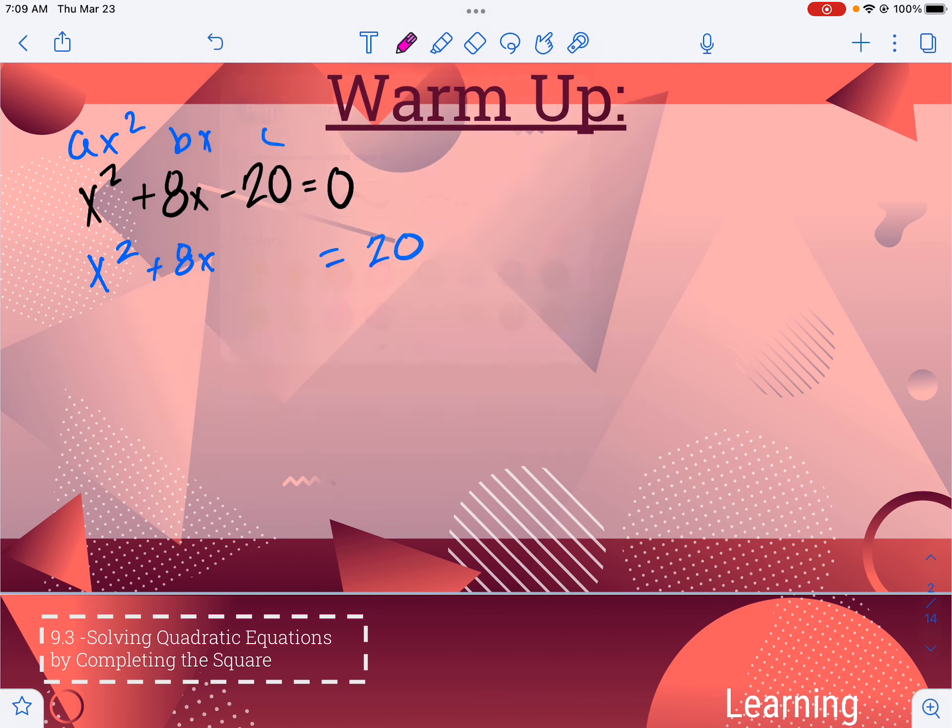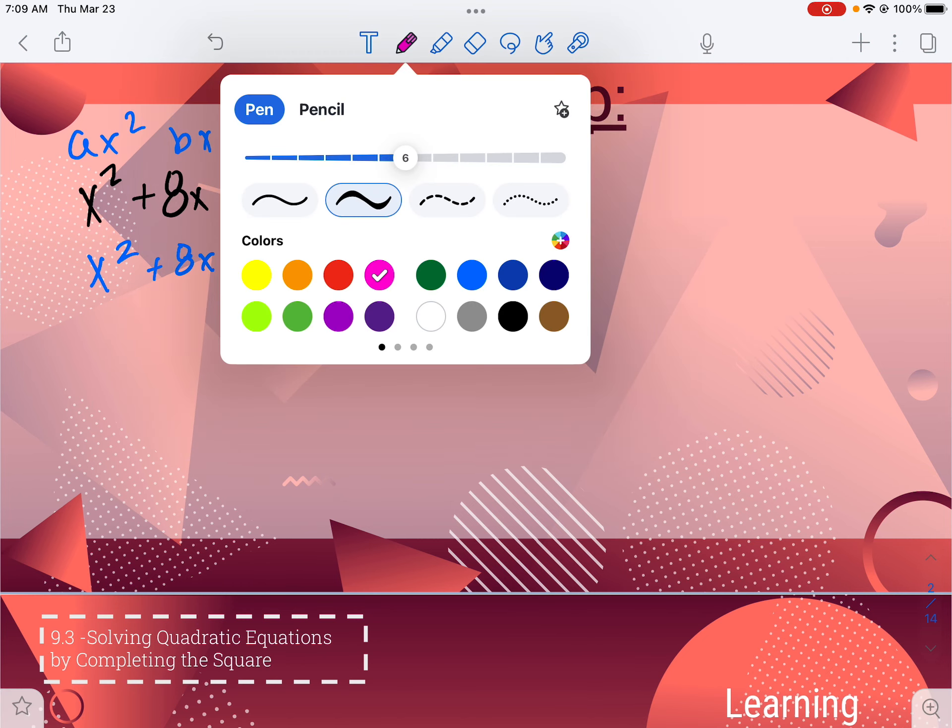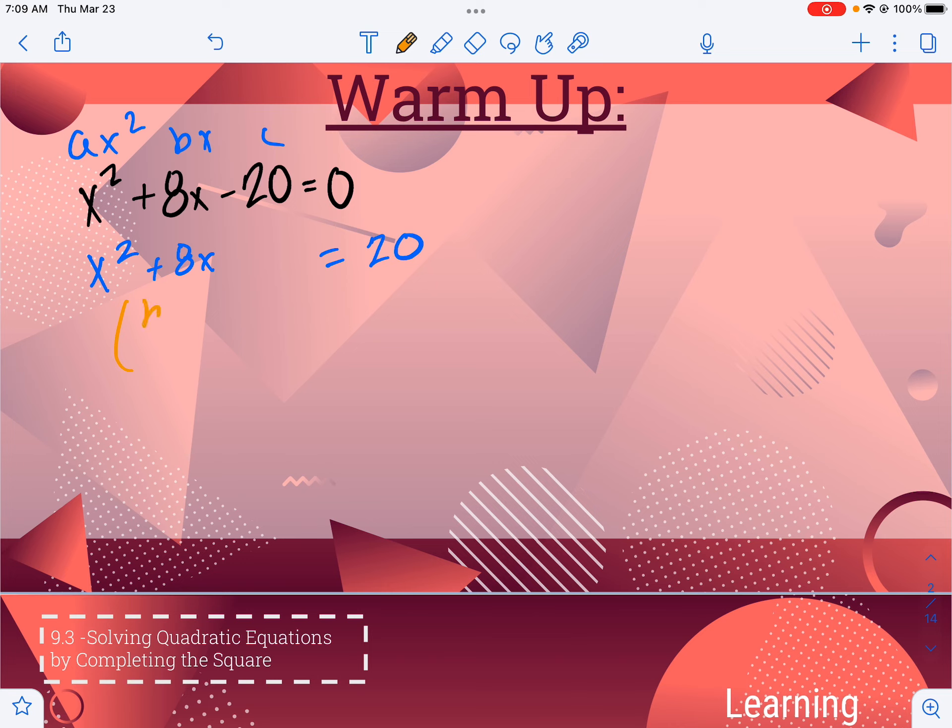Now here's the process we use to decide what c is. We use b over 2 squared. So our b value is 8. That would be 8 over 2 squared, which would give me 4 squared, which would give me 16. So our formula there tells us what we want c to be. We want c to be 16. Now whatever we do to one side of the equation, we also have to do to the other side. So we can't just add 16 to the left side and not to the right side, so we have to add it to both.